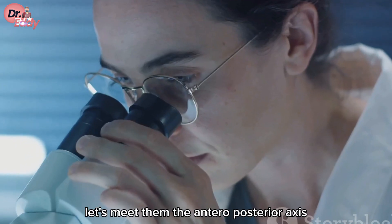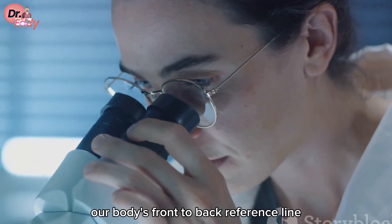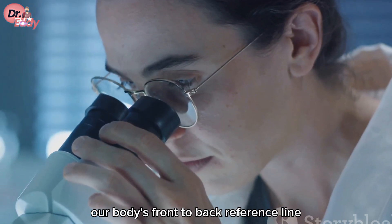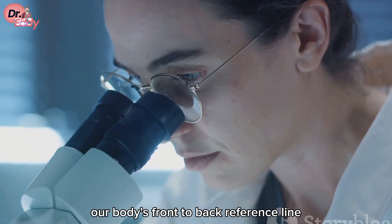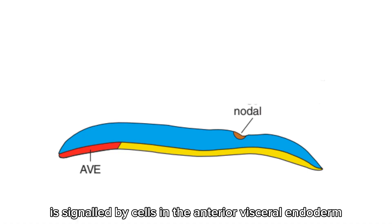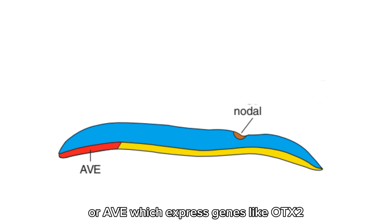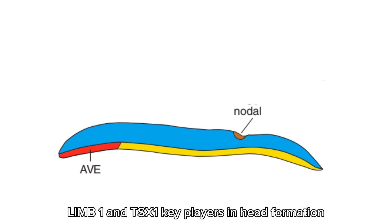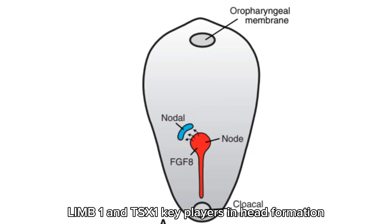The anteroposterior axis — our body's front-to-back reference line — is signaled by cells in the anterior visceral endoderm, or AVE, which express genes like OTX2, LIM1, and TSX1, key players in head formation.